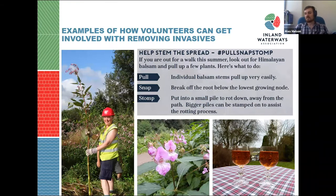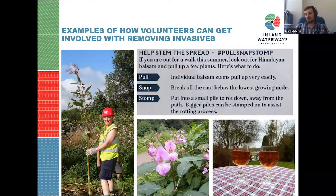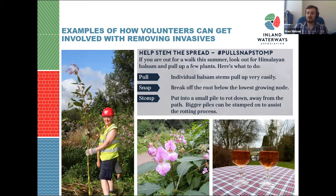You want to rip the root off from the lowest node — the little bulges visible on the stem — and then make a pile of the Himalayan balsam and stamp it down to encourage the rotting process and avoid further spread. It's important to pick it at the right time, usually between June and July, or you run the risk of causing a bigger problem. As you pull the plant, the seeds can start to disperse; and if they get in the water, they travel downstream.